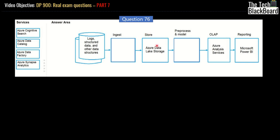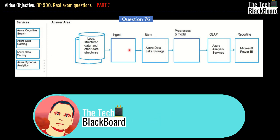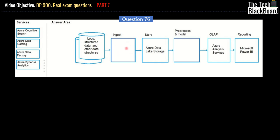Moving on, we store the data in Azure Data Lake — this is already given. Then we preprocess and model the data. We have OLAP, which is online analytic processing, already given as Azure Analysis Services. Finally, we report using Power BI. Coming back to ingestion — we are doing ETL or ELT process. As discussed in the Data Factory video, Azure Data Factory helps you do either ETL or ELT. Thus, the service that should come here is Azure Data Factory.